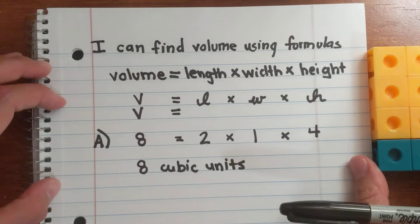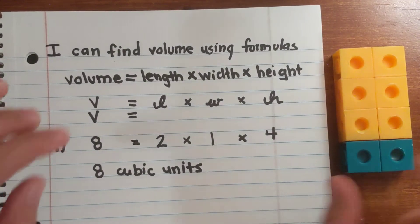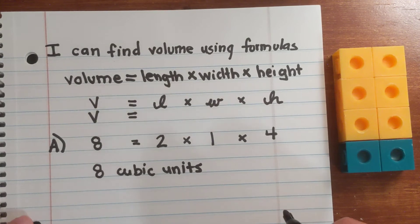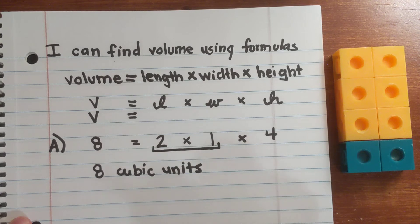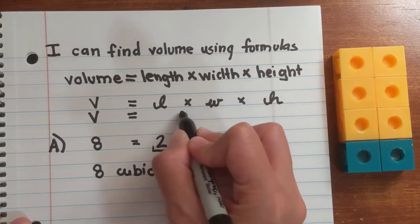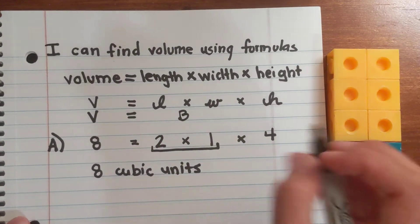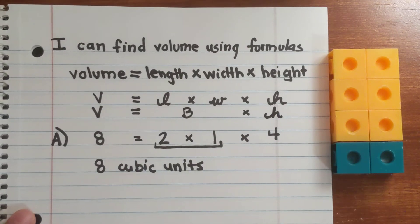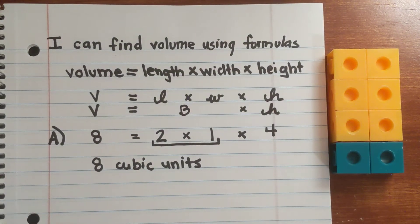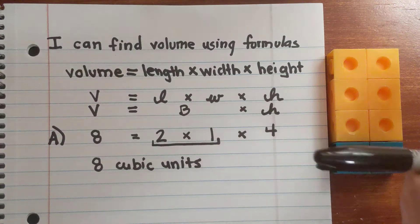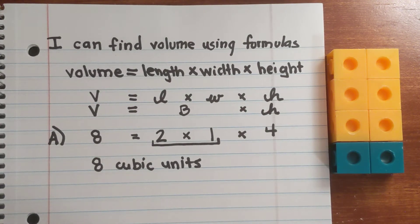Now the way we're going to discover our second volume formula is kind of like a trick. We can combine the length and the width and call that the base. So length times width can just be considered the base — the green part is the base. Then we can use that to multiply by the height. So the shortcut formula is volume is equal to base times height. With our numbers that would be two times four, instead of two times one times four. It's the same thing, just a pretty cool representation.